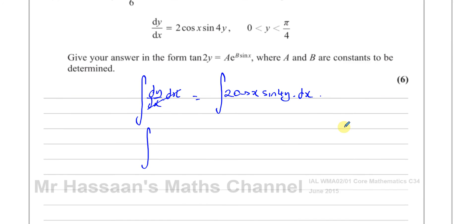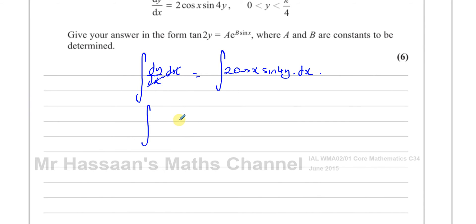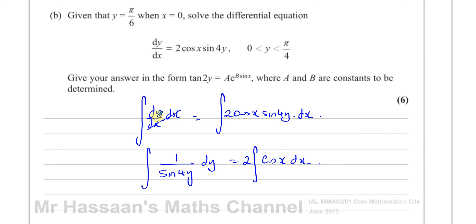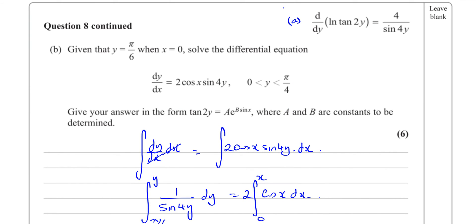So we have the integral of 1 over sin(4y) with respect to y, on the left, and the integral of 2·cos(x) with respect to x on the right. The limits are y = π/6 and x = 0. Using those boundary conditions will allow us to find the constant of integration directly.